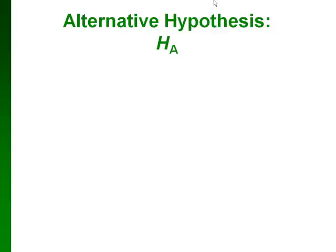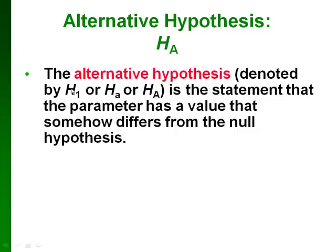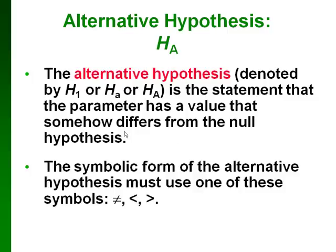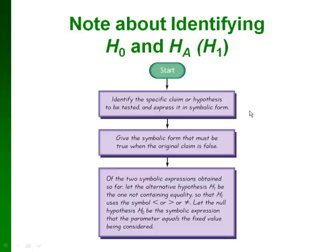Our other hypothesis is called the alternative hypothesis. In this textbook, they use H with a subscript capital A — in other places you might see H sub 1. This is a statement saying that the population parameter has a different value than what is shown in the null hypothesis. In this course, the alternative hypothesis is going to have either a not-equal, a less than, or a greater than sign.